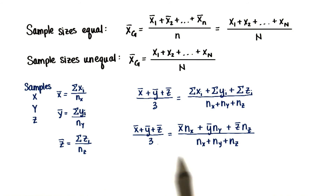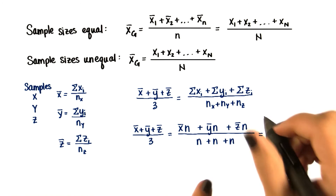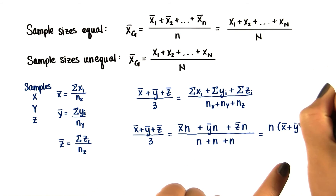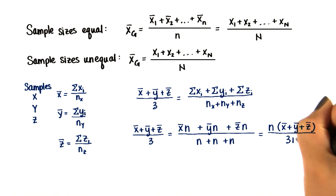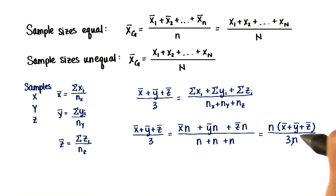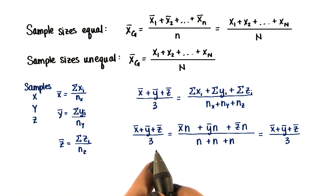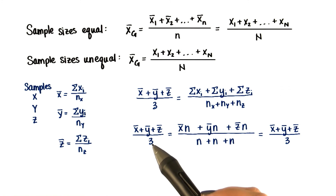These are not the same if the number in each sample is different. But if there's the same number in each sample — let's just call it n — then we can rewrite this as n times the sum of the sample means, divided by 3n. The n's cancel out, and then you get the same thing. So that's why if the sample sizes are the same, which they will be throughout this lesson, we can just use the mean of means.